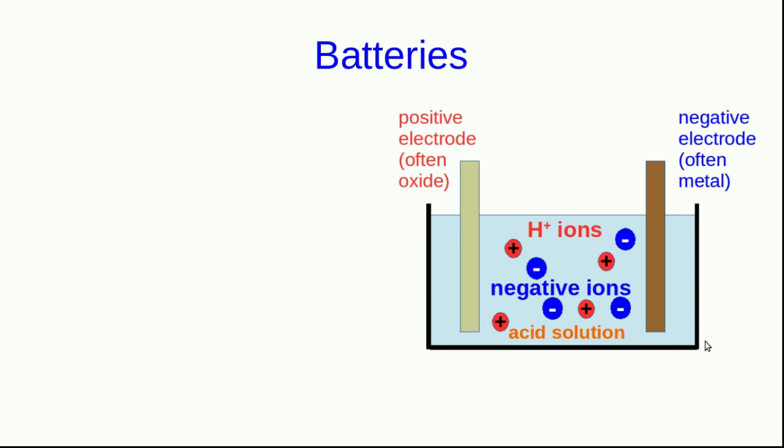Van de Graaff generators are fairly easy to understand because they're basically just an automated way of rubbing things to separate charge, but they're not really practical for everyday circuits. So let's look at what is practical, which is batteries.